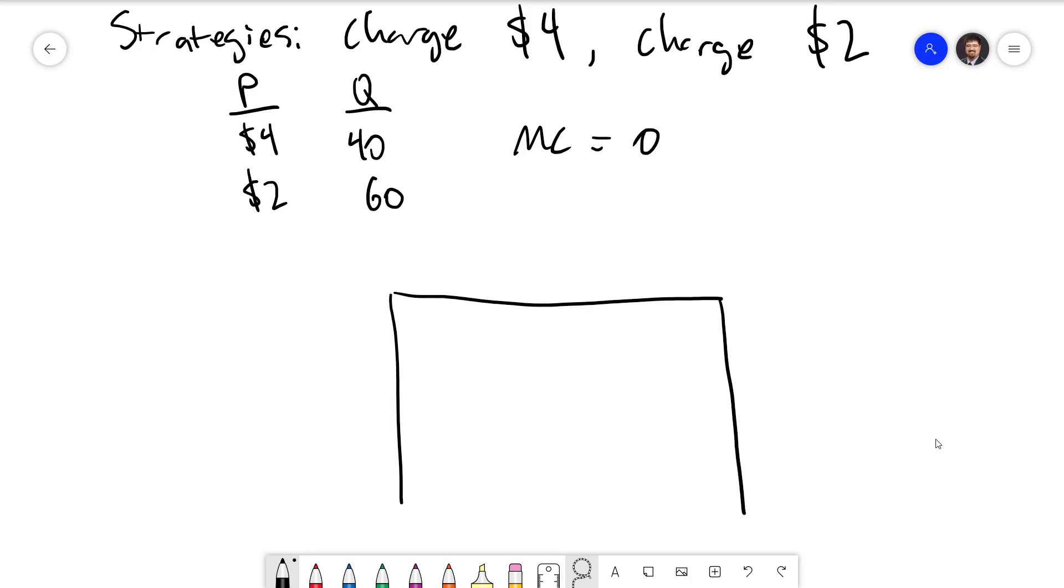So maximizing revenue is equivalent to maximizing profit. Let's put all this together into the game matrix. Since each firm has two choices, this is again going to be a 2x2 grid. I'll put Firm 1 on the rows and Firm 2 on the columns. We'll fill in the strategies of $2 or $4 for each firm.